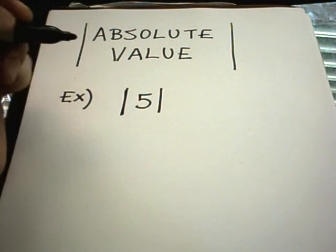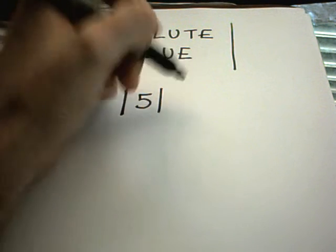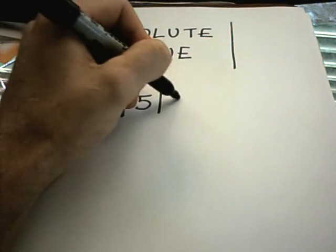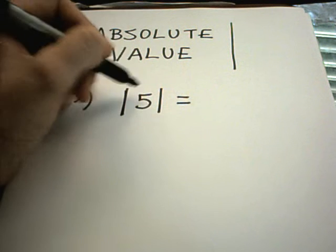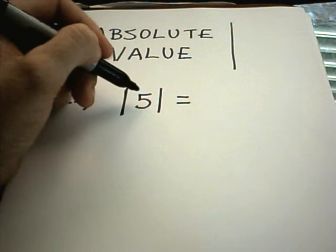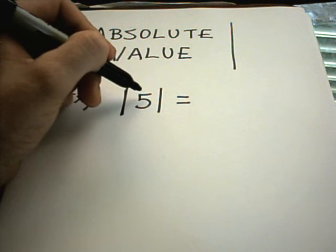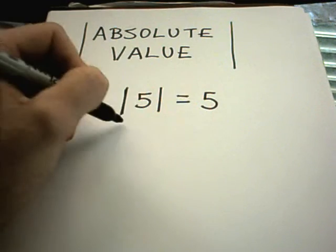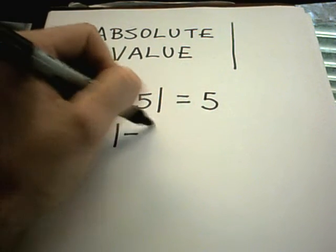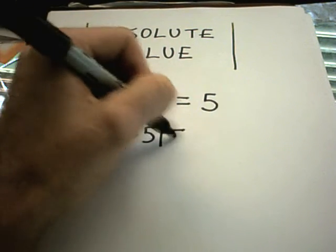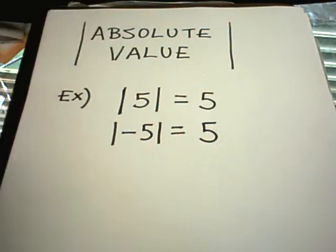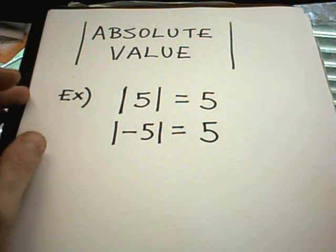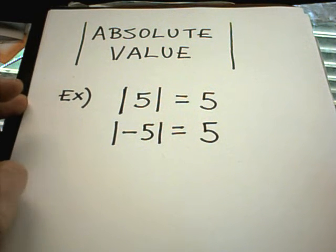So you're going to have to simplify everything inside at first. Obviously we're doing a simple example here. Basically it says the resulting number, if the number on the inside is positive, well then it stays positive. If it's negative, like negative 5, you just make it positive. And that's what absolute value does, it just makes things positive.